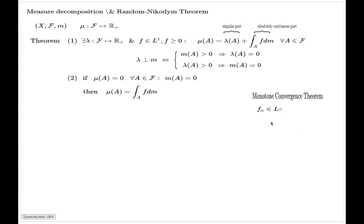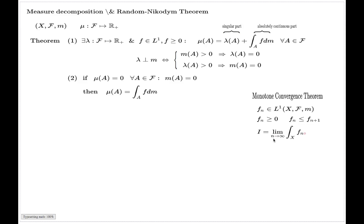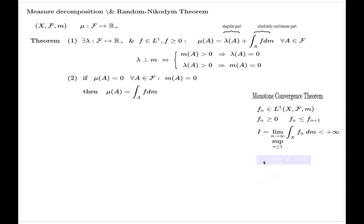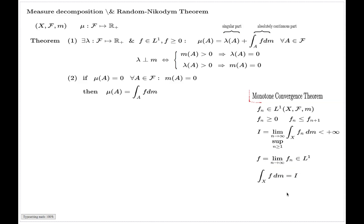The result itself says: if I have a sequence of summable functions which are non-negative and point-wise monotone — or almost everywhere non-negative and almost everywhere point-wise monotone — and if you additionally have that the limit of the integral is finite, then this limit will always exist because this is an increasing sequence of non-negative numbers. So if this limit is finite, then the function given by the point-wise limit is summable as well — that's the first claim of the Monotone Convergence Theorem — and the second claim is that the integral of this limit function is exactly equal to this limit quantity.